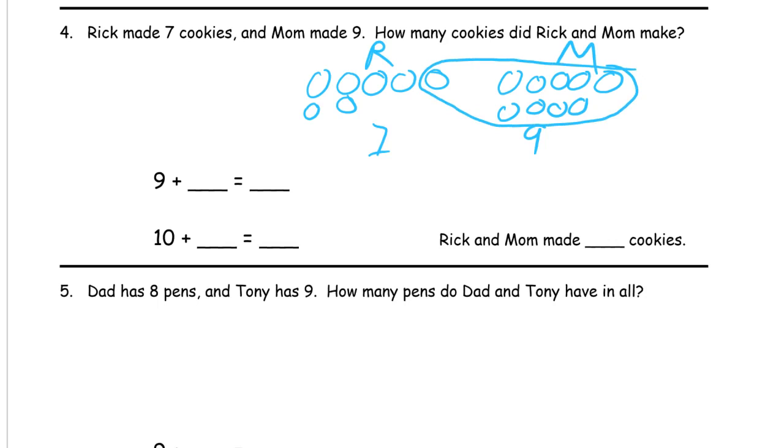So here in the picture, I'm going to count those ten together and they have that six. So that's nine and this, that's the one right there makes the ten, and then ten, six is 16. Rick and mom make 16 cookies.